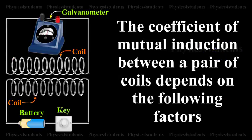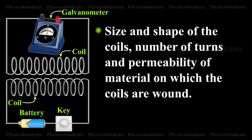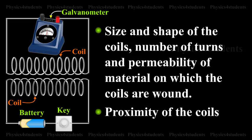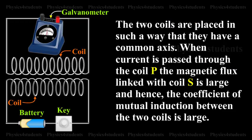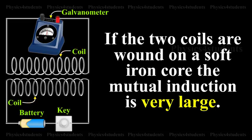The coefficient of mutual induction between a pair of coils depends on the following factors: size and shape of the coils, number of turns, and permeability of the material on which the coils are wound, and proximity of the coils. When two coils P and S have their axes perpendicular to each other, the magnetic flux linked with S is small, and hence the coefficient of mutual induction between the two coils is small. If the two coils are wound on a soft iron core, the mutual induction is very large.